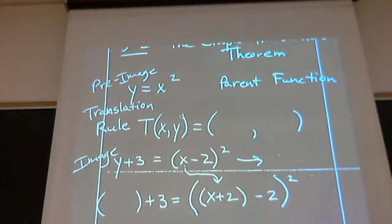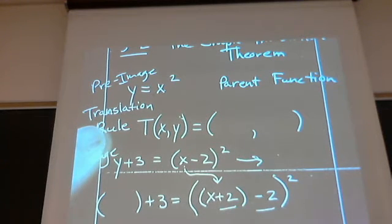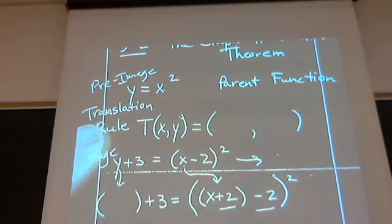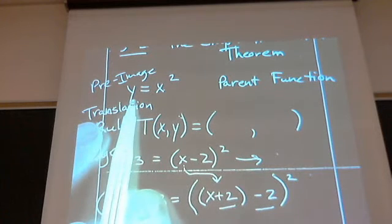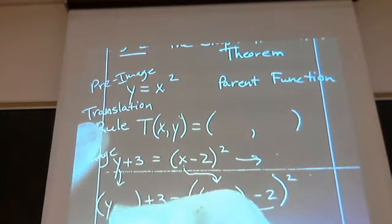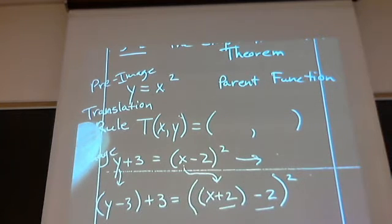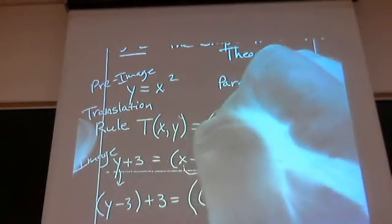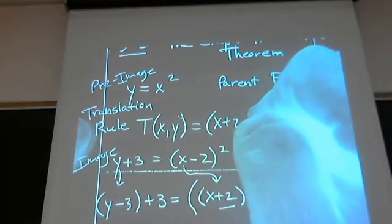Because if that was the case, then plus two and minus two would cancel out. What would you replace y with so that you could get rid of that three and get back to just plain old y? Hopefully, you would say y minus three. In other words, what you just came up with, those replacements right there, are the definition of the rule.